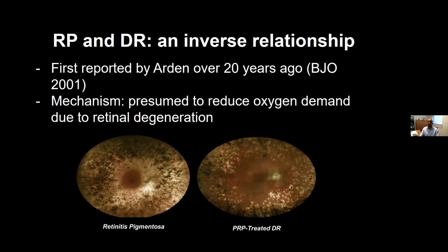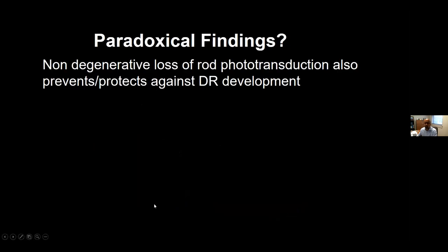That's a curious inverse relationship. Jeffrey Arden first reported this 20 years ago, and the mechanism of this protection is presumed to be a reduced oxygen demand of the neural retina due to retinal degeneration. I'm demonstrating this in two images of patients: one with retinitis pigmentosa and diabetes, who despite 40 years of diabetes has really none of the stigmata of diabetic retinopathy, and on the right, a patient treated with peripheral laser-based ablation of the neural retina — reducing oxygen demand by reducing the amount of neural tissue.